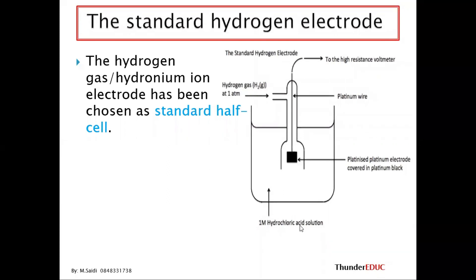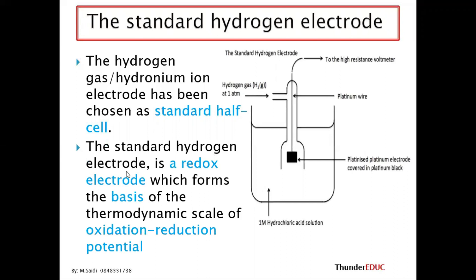In the standard hydrogen electrode setup, you have hydrochloric acid — just to increase conductivity — and a platinum electrode. Why platinum? Because hydrogen is a gas, so we need a surface where hydrogen can react. The platinum provides that surface area for hydrogen to react. When hydrogen reaches the platinum, it can then react from there.